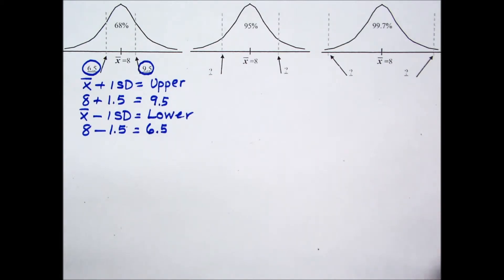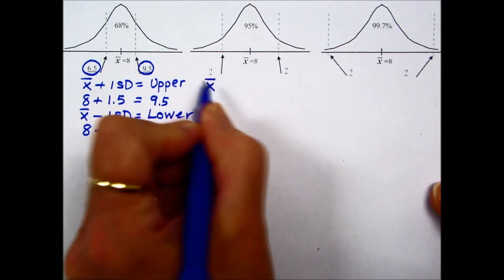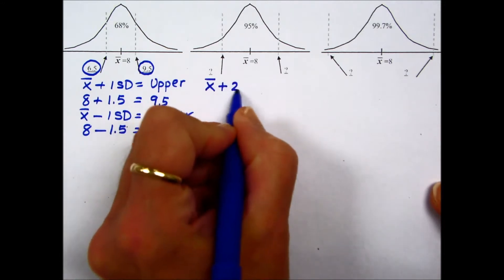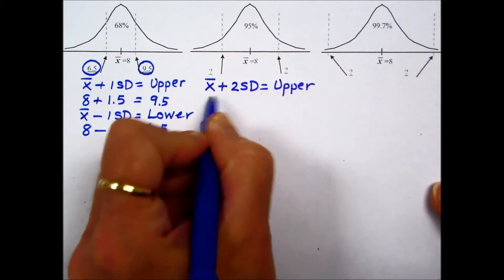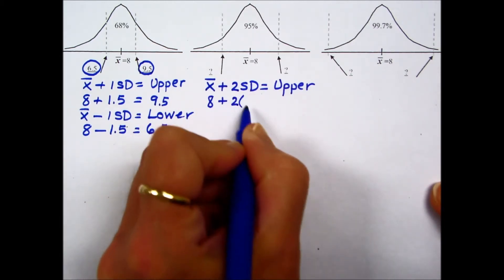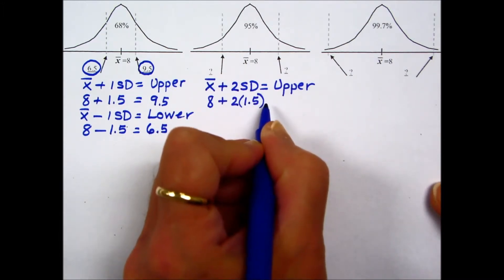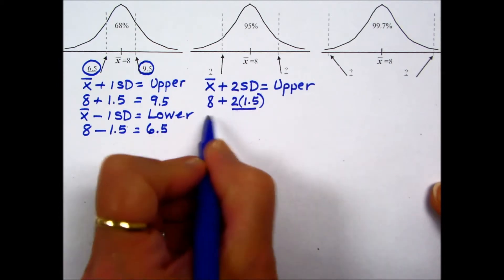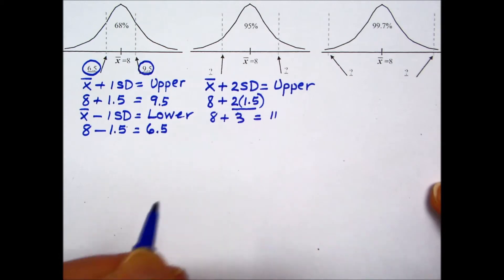To find 95% of the values and the boundaries for those, the formula is to take the mean plus two times the standard deviation to determine that upper boundary. So we'll plug in our mean, multiply our standard deviation given of 1.5 by 2 to determine that upper boundary. We'll multiply first, 1.5 times 2 is 3 and added gives us an upper boundary of 11.